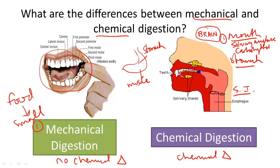The second step takes place in the stomach, where enzymes called pepsin, for example, will break down proteins into smaller individual components, such as amino acids.